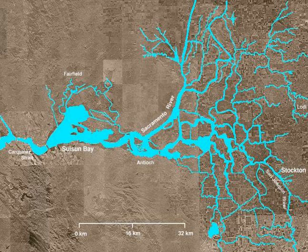The city of Stockton is located on the San Joaquin River on the eastern edge of the delta. The total area of the delta, including both land and water, is about 1,100 square miles.